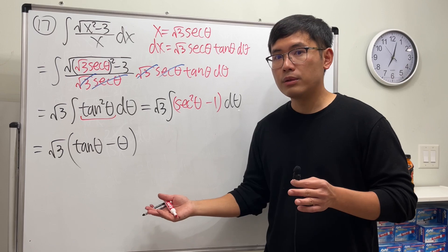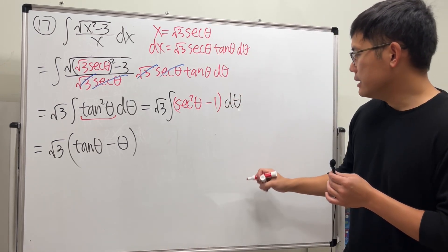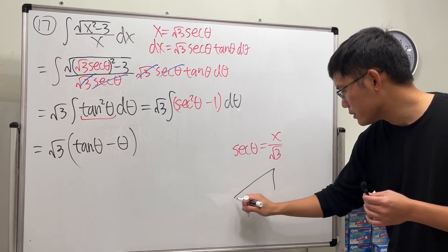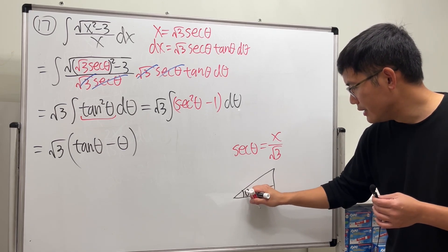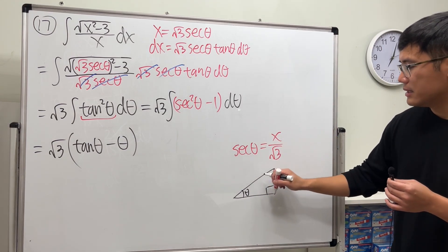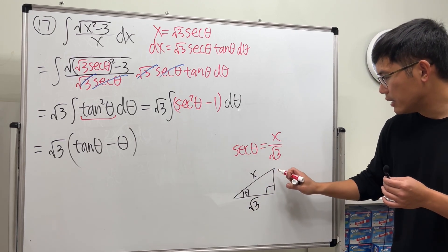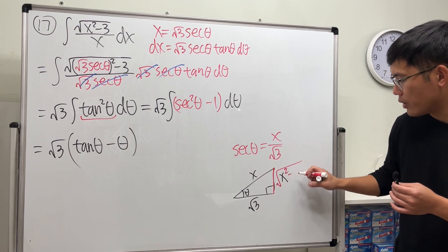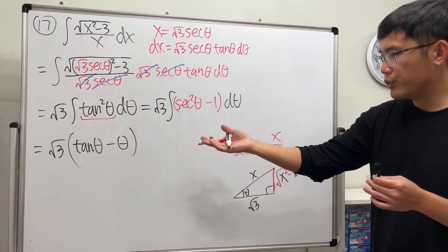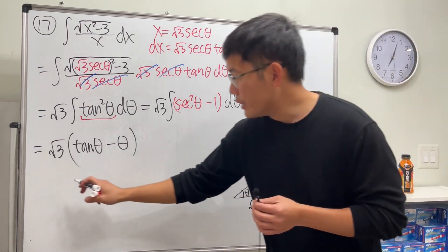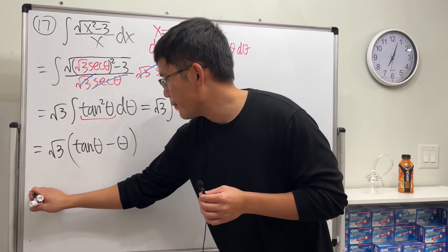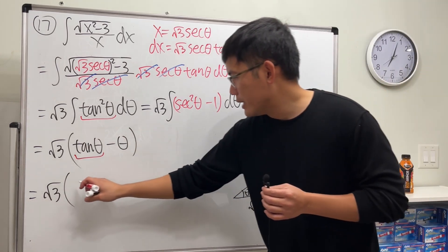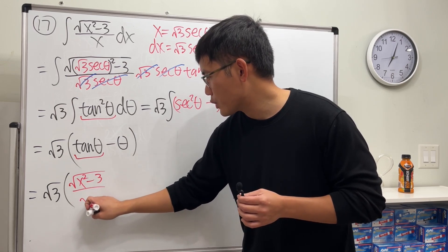Now we go back to the x world. We know secant theta equals x over square root of three. Draw a triangle with theta here — secant is hypotenuse over adjacent, so the opposite side is square root of x squared minus three. To get tangent, it's opposite over adjacent: square root of x squared minus three over square root of three. So after distributing, tangent theta gives us square root of x squared minus three over square root of three.